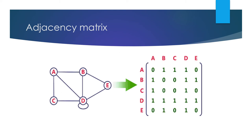Next is vertex d. For d to a, one edge is there so 1; for d to b, edge is there so 1; for c to d, one edge is there so 1. For d to d, there is a self-loop so it is taken as 1. For d to e, there is one edge so it is written as 1. Next is vertex e. There is no edge between e and a, so it is written as 0. From e to b, there is one edge so it is taken as 1. From e to c, there is no edge so it is taken as 0. From e to d, 1 is taken, and for e to e, there are no edges or loops so it is taken as 0.